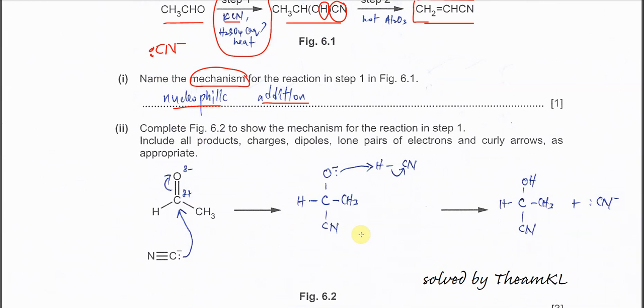Part (ii): Complete Figure 6.2 to show the mechanism for step 1. First, you must put the dipole: partial negative on oxygen, partial positive on carbon. Second, you need to draw an arrow from the lone pair on the cyanide carbon here. Draw this arrow to point to the carbonyl carbon. This shows a new bond will form between this carbon and this carbon.